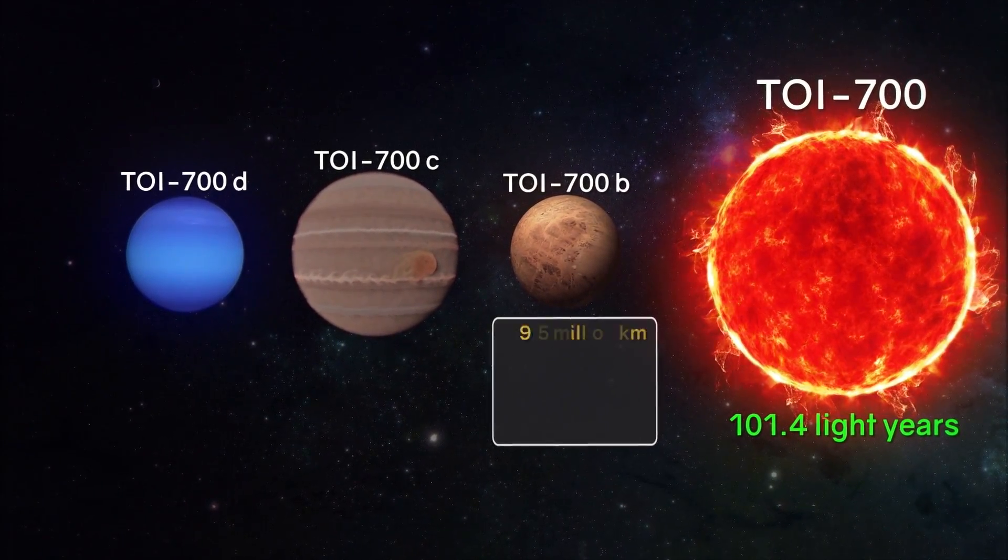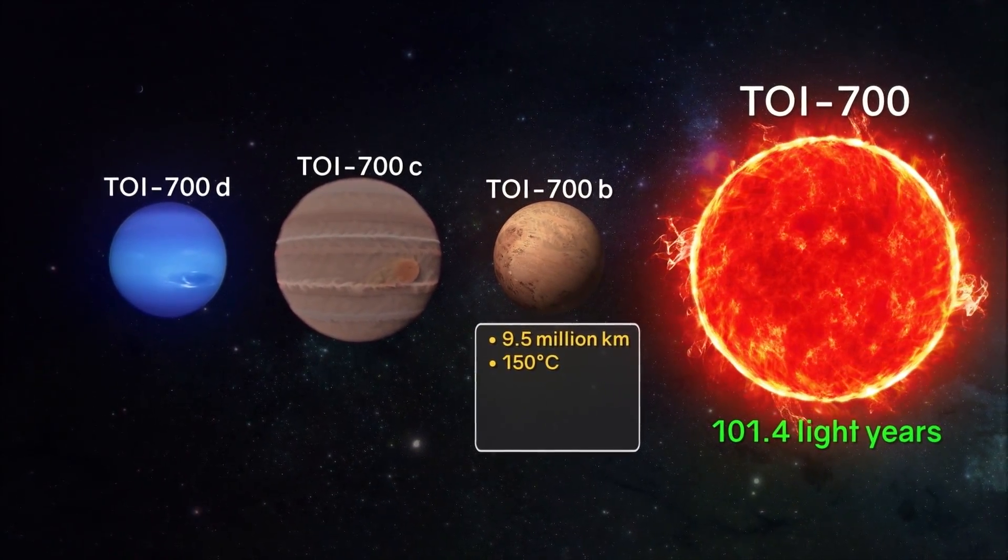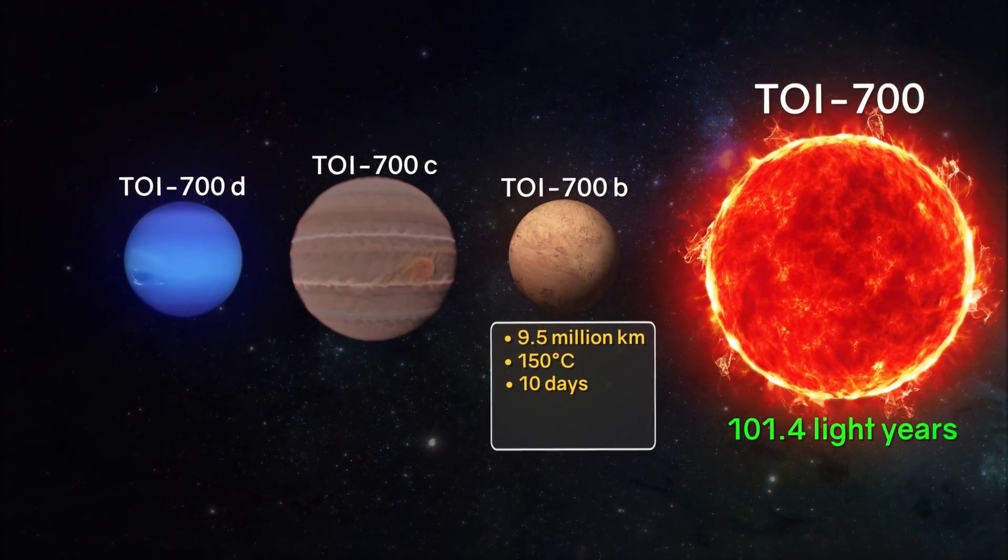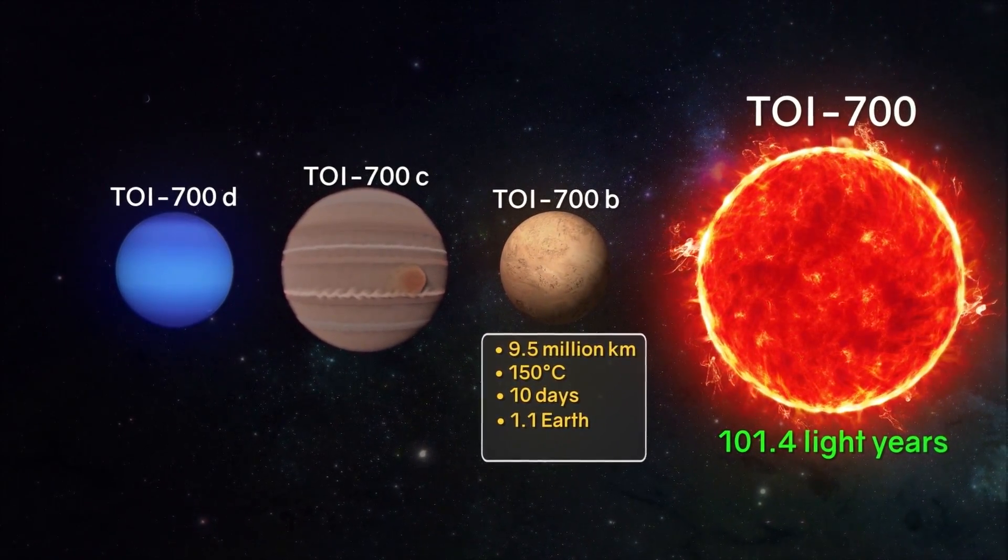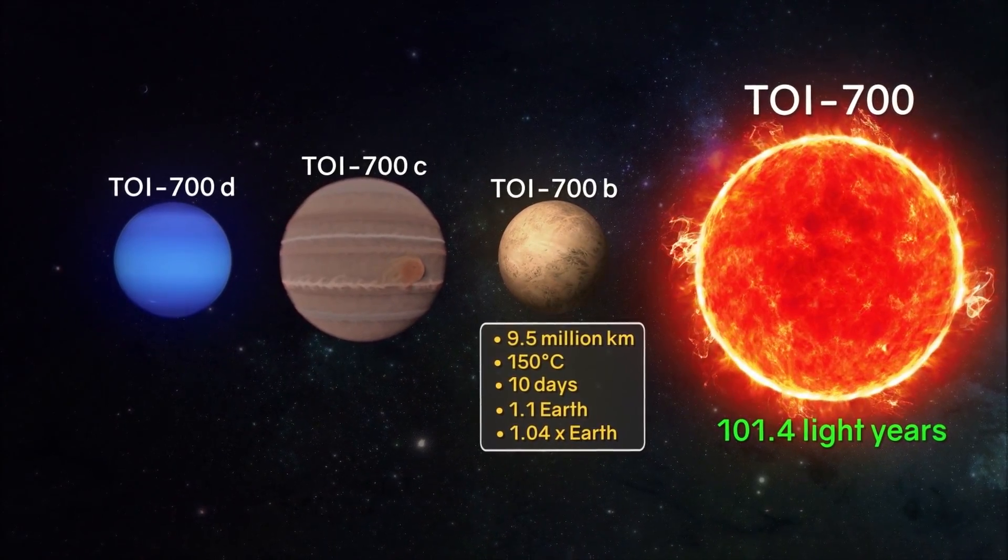TOI 700b: The distance to the star is about 9.5 million kilometers. The average surface temperature is 150 degrees Celsius. The period of rotation around the star is approximately 10 days. The mass is about 1.1 times that of the Earth. Size 1.04 times the size of the Earth.